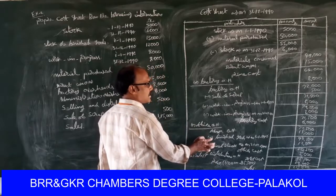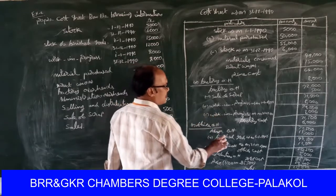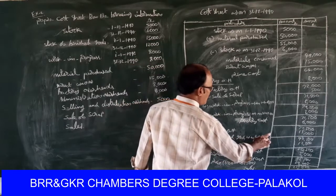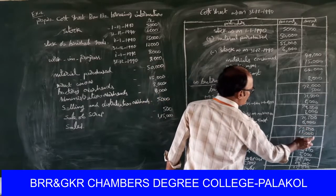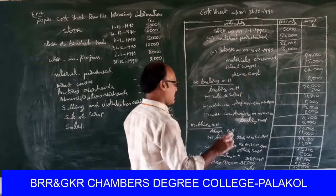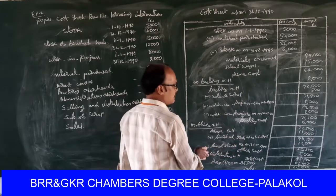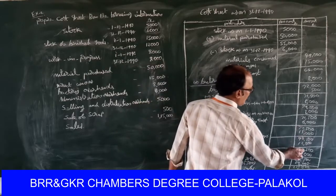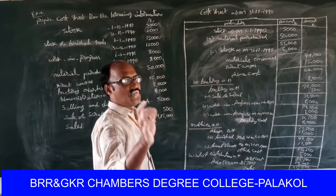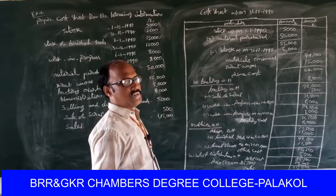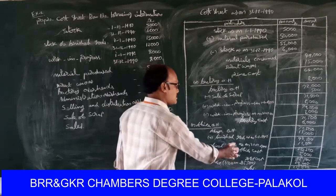Opening value of finished stock is added to office overheads. Opening stock of finished goods as on 1/1/1990: fifteen thousand. Seventy-seven thousand five hundred plus fifteen thousand equals ninety-two thousand five hundred. Less finished stock as on 31/12/1990: twelve thousand. Result is eighty thousand five hundred, treated as office cost.